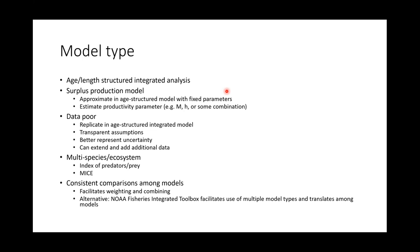The reason we should use a single type of model that allows the representation of a wide range of other models is because it makes comparisons among models more consistent, and this facilitates the weighting and combining of models in an ensemble. One alternative might be the use of the NOAA Fishery Integrated Toolbox, which facilitates the use of multiple model types and also translates among those models — something else that should be considered when developing the expert system.